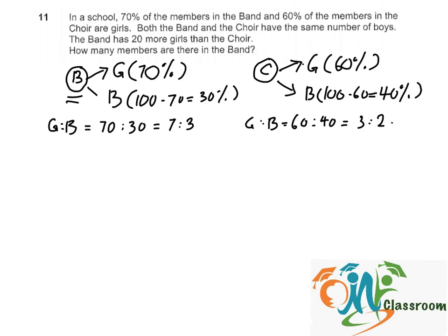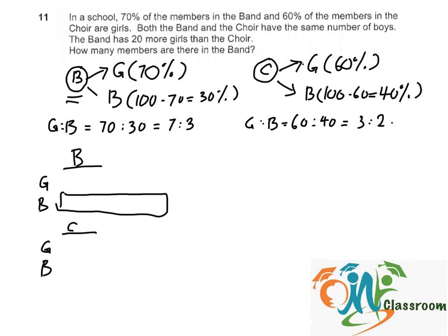So this is the band and we have girls and boys. This is the choir — girls and boys — and the number of boys are the same. For the band, the number of units would be 3 units, and for the choir, 2 units.